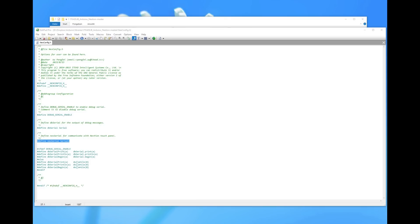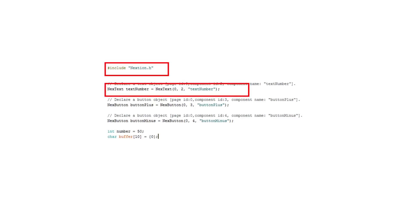Now we can start to look at our coding. After the include of the library, we have to declare each object of our screen we want to use later — here, text number, button plus, and button minus. We use our notes from before to fill in the IDs and names; they have to match exactly. For each field we have to create a buffer to hold the text. Make it long enough, otherwise you risk crazy behavior of your Arduino because of buffer overflow. At the beginning we fill it with 0, which means it is empty.